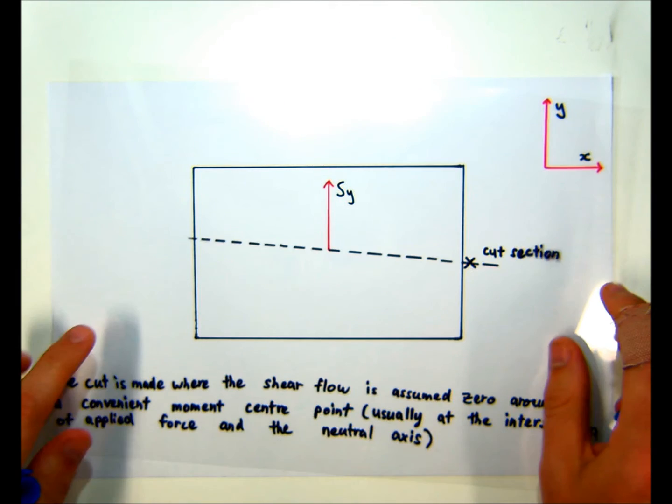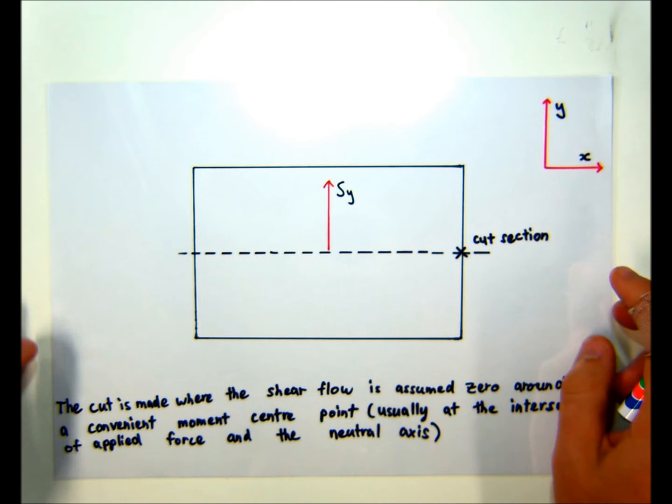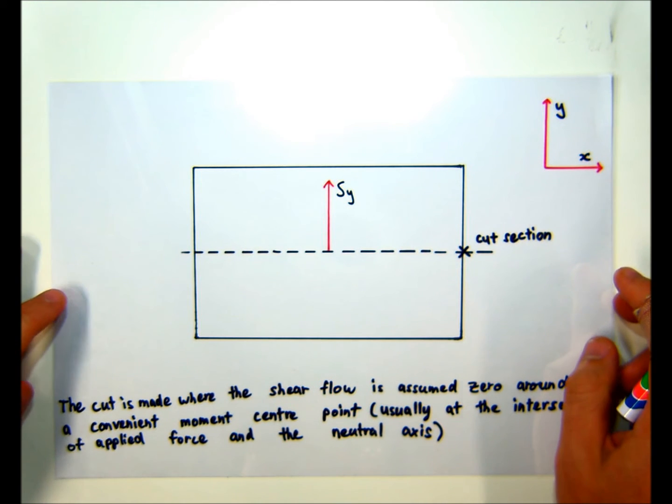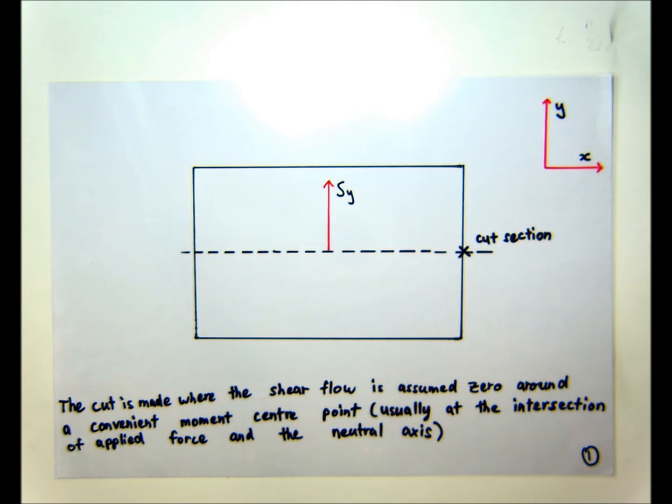Okay, so how do we find QS0? Well, to find QS0, we have to break into the section somewhere. We can't find either QSB or QS0 without starting our integration somewhere. So what we do is we take a cut.